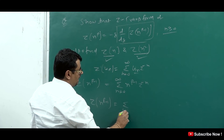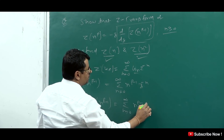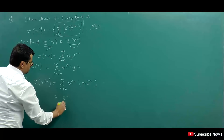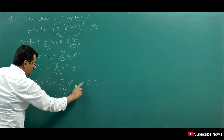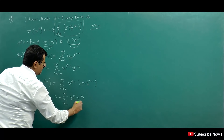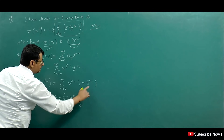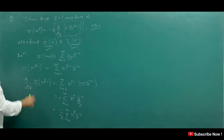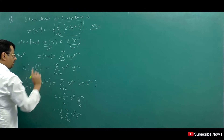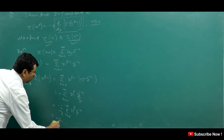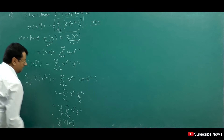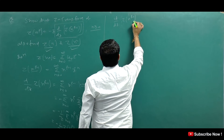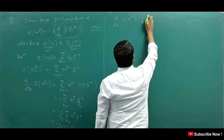Taking out the minus sign, and noting that the extra factor of n multiplies n^(p-1) to give n^p, and Z^(-n-1) = Z^(-n)/Z, we get: d/dz of Z{n^(p-1)} = (-1/Z) times summation of n^p times Z^(-n), which equals (-1/Z) times Z{n^p}. Therefore Z{n^p} = -Z times d/dz of Z{n^(p-1)}, which is what we needed to prove.